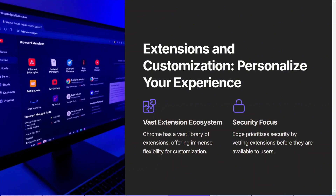Next is extensions and customization — how these two applications differ when it comes to personalizing your experience. One of the defining characteristics of Google Chrome is its extensive library of extensions. With thousands of extensions available, Chrome offers tremendous flexibility, enabling users to customize their browsing experience to meet personal preferences or specific needs. Microsoft Edge also supports extensions, although it places a stronger focus on security, rigorously vetting each extension before it becomes available in the Edge add-on store. While Edge's extension library is growing, it still has a ways to go to match Chrome's vast ecosystem.